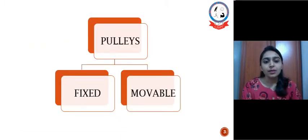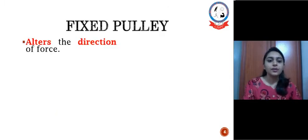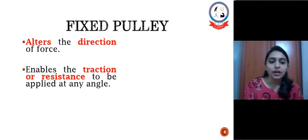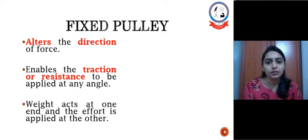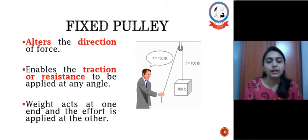Pulleys can be of fixed pulley or movable pulley. Fixed pulleys are used to alter the direction of force and enable the traction or resistance to be applied at any angle. Weight acts on one end and effort is applied at the other end.